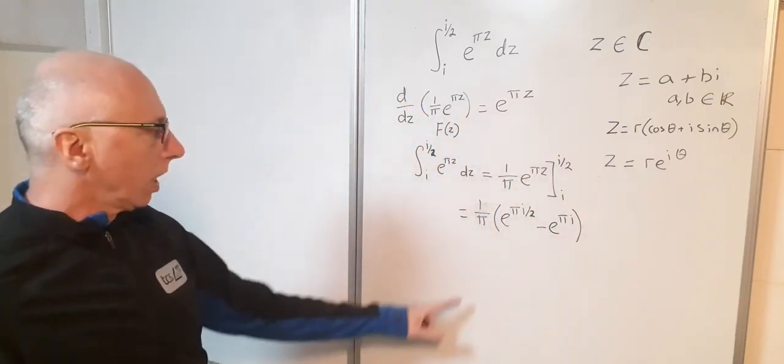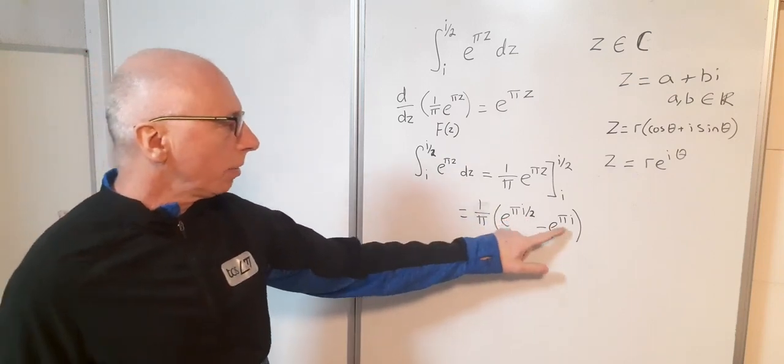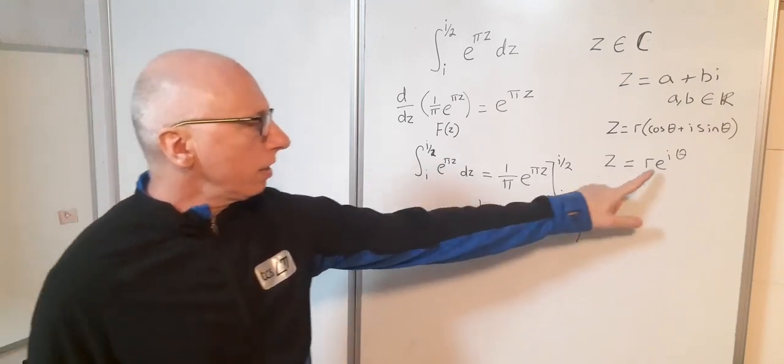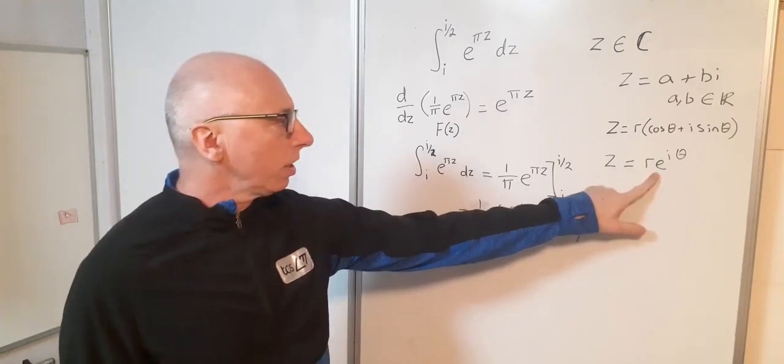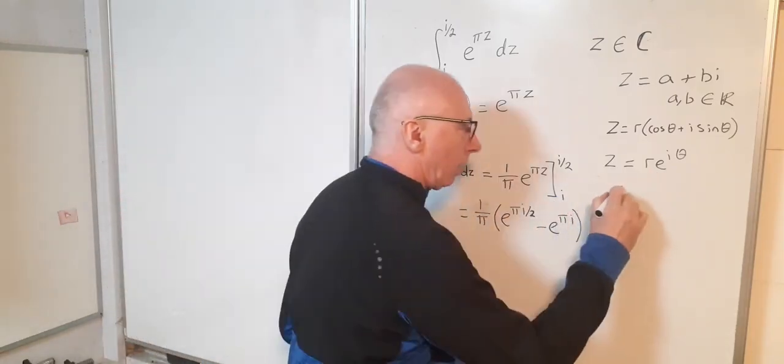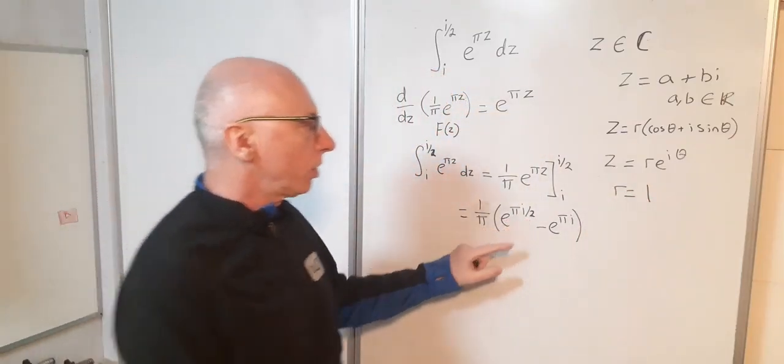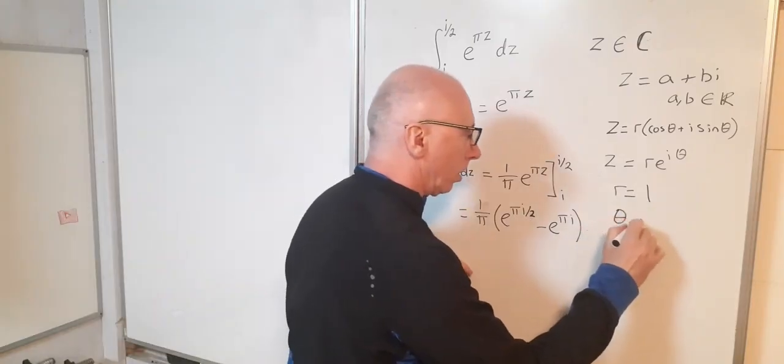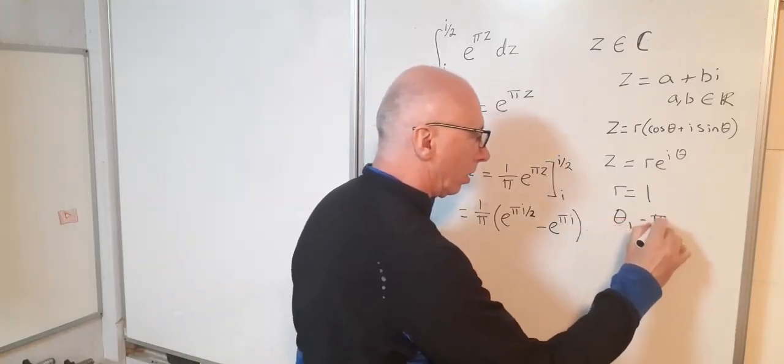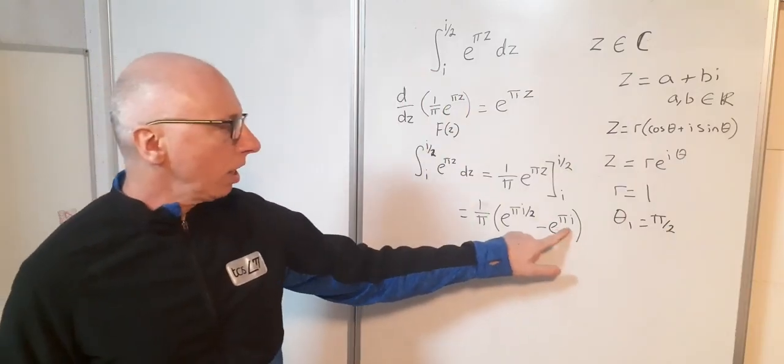Well I've got a lot of pi's going on here: e to the pi i over 2 and e to the pi i. Well this is just a representation of a number in exponential form. So here r equals 1. My first theta for this one would be pi over 2, and my second value for theta would be pi.